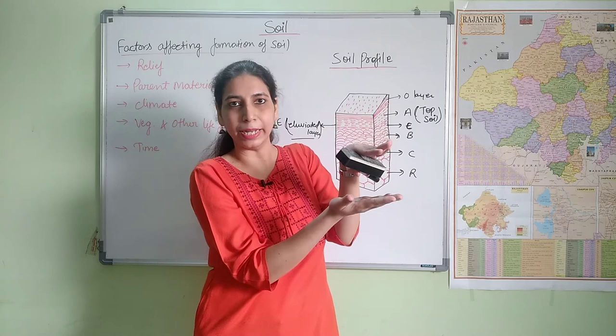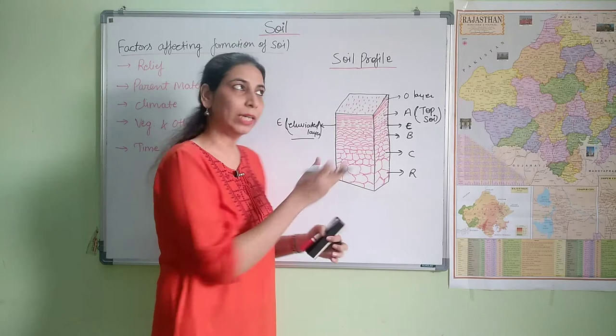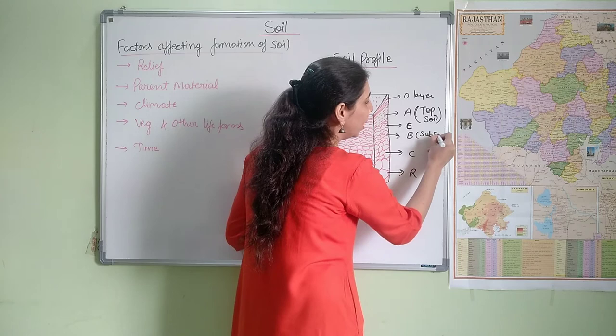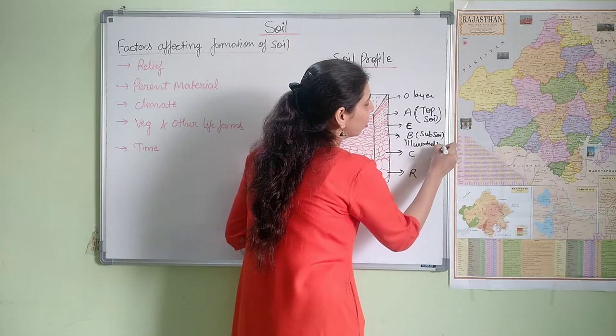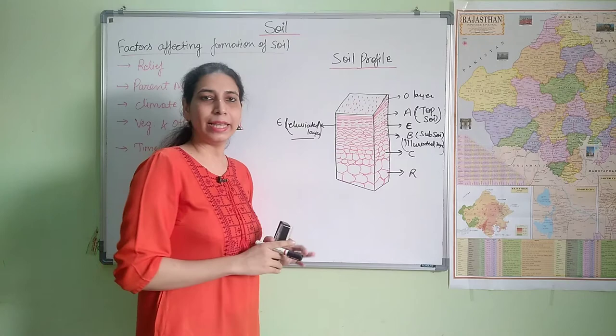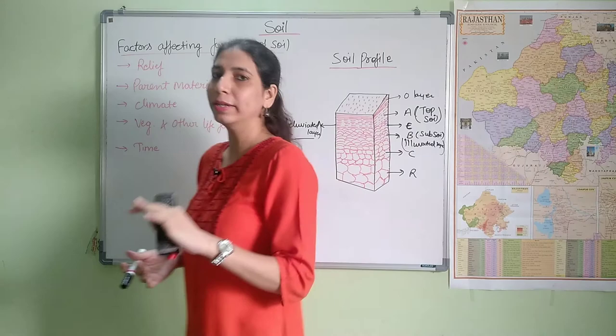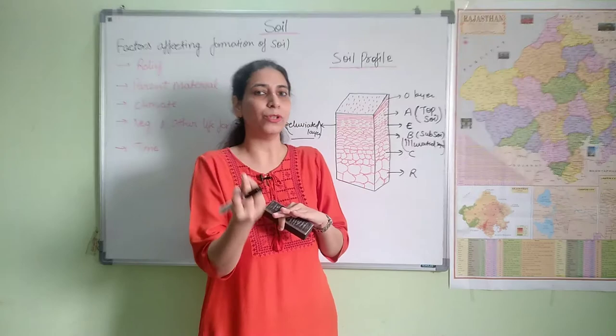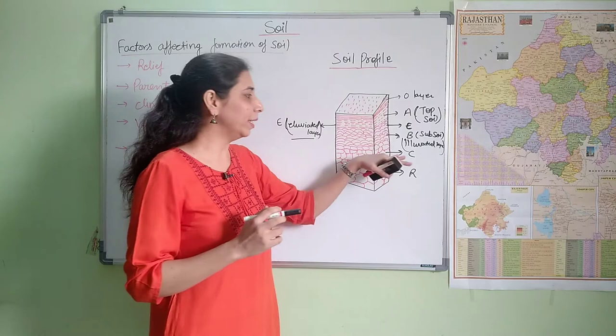Because minerals leach from the A layer down to the B layer, the E layer between them is called the zone of eluviation — where materials have been removed. The B layer, which is the sub-soil, is called the zone of illuviation because deposition happens there. In laterite soils, aluminium and ferrous content remain at the top while silica is leached away. Because ferrous content remains on top, laterite soils have their characteristic red and yellow color.